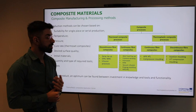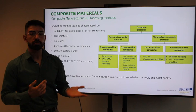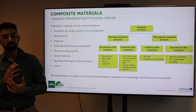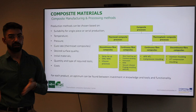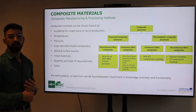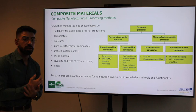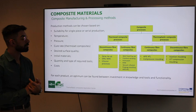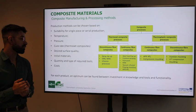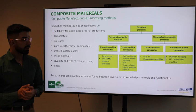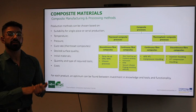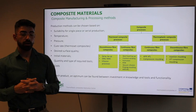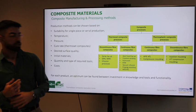How do you choose a manufacturing method? These methods can be chosen based on suitability for single-piece or serial production, the required processing temperature, the type of pressure, the cure rate for thermoset composites, the desired surface quality, the raw material type (thermoset or thermoplastic, discontinuous or continuous fiber), the quantity and lead time of required tools, and the costs that can be afforded. For each method, there is an optimization of knowledge, tools, and functionality.